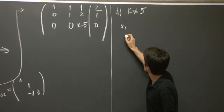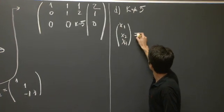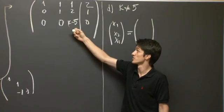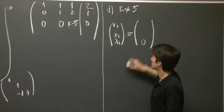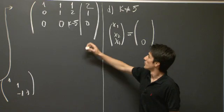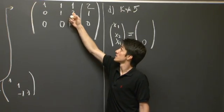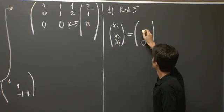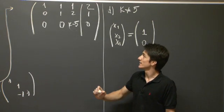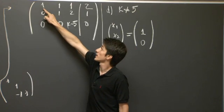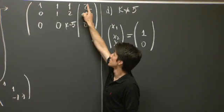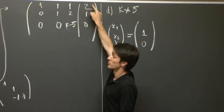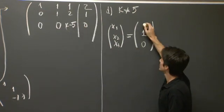So when k is not equal to 5, this was non-zero. Therefore, x3 needs to be 0, right? When x3 is 0, we have x2 plus 2 times x3. So x2 plus 0 equals 1. Therefore, x2 is 1. And then we go back to the first row. We have x1 plus x2 plus x3 equals 2. So x1 plus 1 plus 0 equals 2. So x1 plus 1 equals 2. And therefore, x1 is 1.